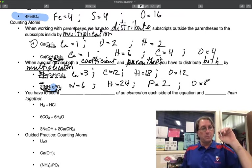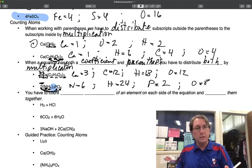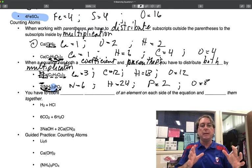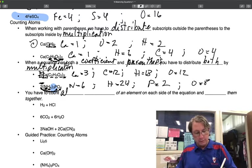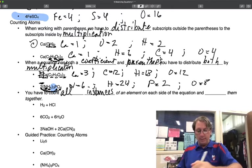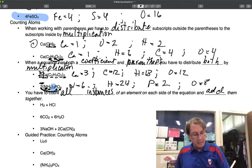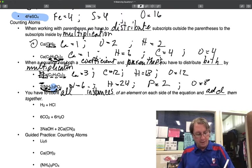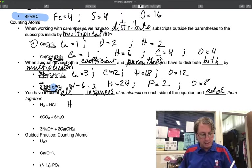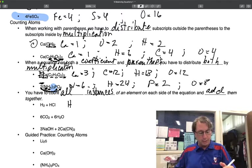Now, the one last complication I can give you is I can put the same element in multiple compounds, which means you have to add them all together. So you have to count all instances, and then add them. For example, I have H2 plus HCl. Hydrogens in both, so I have to add the hydrogens together. What I do is I figure out how many hydrogens are in each of the two compounds, then add the two numbers together.